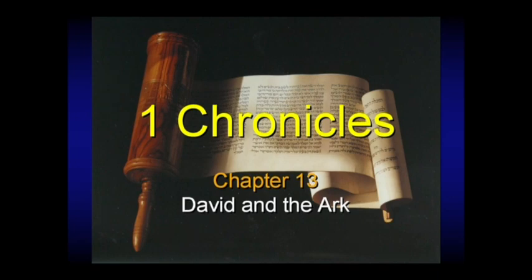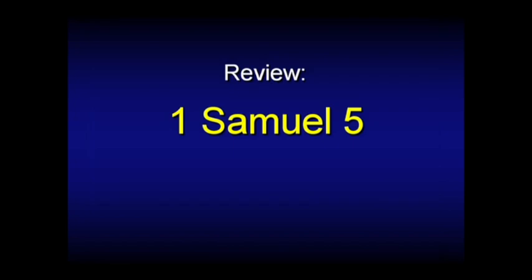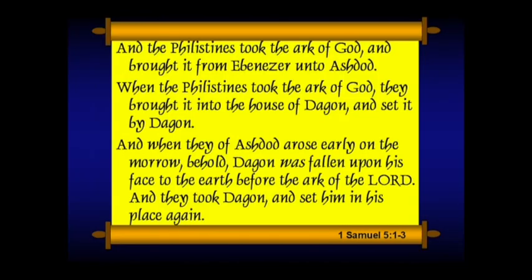But before we get into the ark, I want to pop back about a century earlier. I think it's one of the most humorous passages in the Bible. We're reviewing 1 Samuel chapters 4 through 7. In 1 Samuel 5: 'The Philistines took the ark of God and brought it from Ebenezer unto Ashdod. When the Philistines took the ark of God, they brought it into the house of Dagon and set it by Dagon.' And when Ashdod arose early in the morning, behold, Dagon was fallen upon his face to the earth before the ark of the Lord. That's some god they're worshiping. They took Dagon and set him up on his place again. When they arose early the next morning, behold, Dagon was fallen upon his face to the ground before the ark of the Lord, and the head of Dagon and both the palms of his hands were cut off from the threshold. Only the stump of Dagon was left to him.